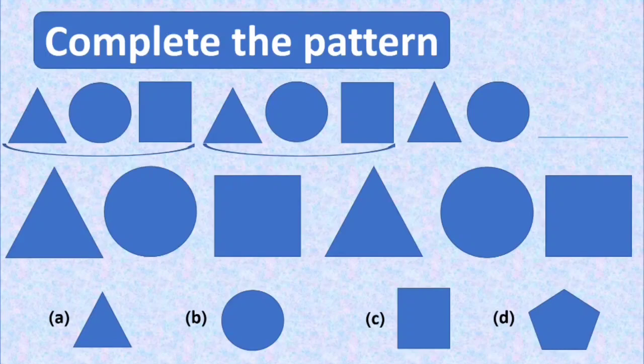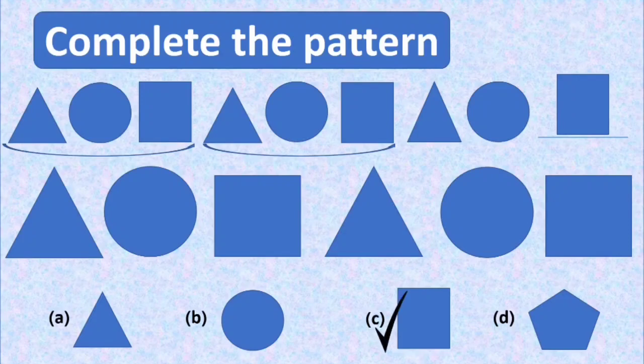The next will be triangle, circle, and then it's a blank. So the blank is for a square. Yes, option C is the correct option. We will fill this blank with a square and put a tick mark at option C.